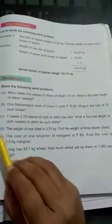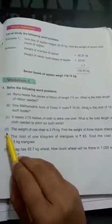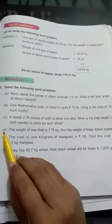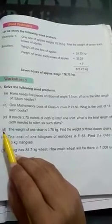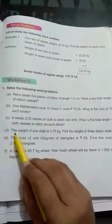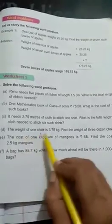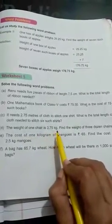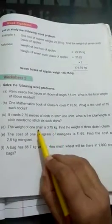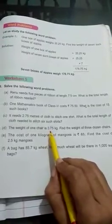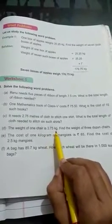Student, now see the D part. This is one of the very important questions. Listen and watch it very carefully. The weight of one chair is 3.75 kg. One chair ka weight kitna hai, 3.75 kg yaani ki kilogram.